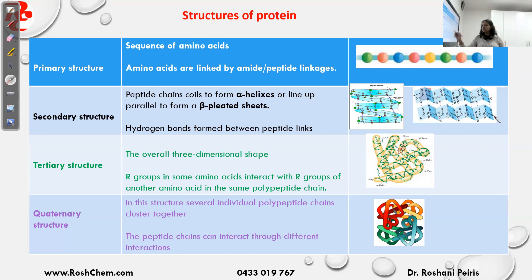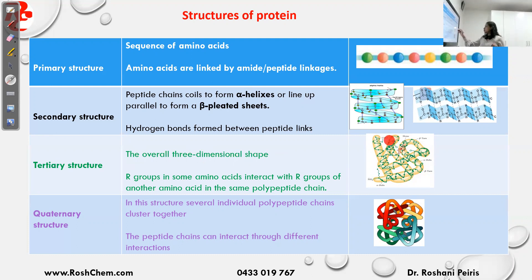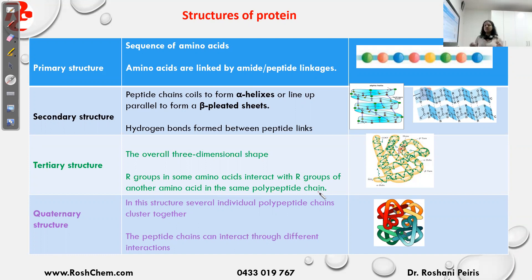In the tertiary structure, we get the overall three-dimensional shape adapted by the protein when the R groups are interacting. The secondary structure will fold three-dimensionally to give the tertiary structure. R groups of one amino acid interact with R groups of another amino acid in the same polypeptide chain. There can be many different types of interactions between R groups: dispersion forces, dipole-dipole interactions, hydrogen bonding, disulfide bridges, and ionic interactions.